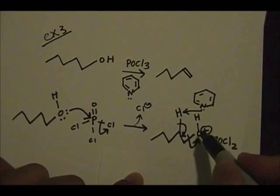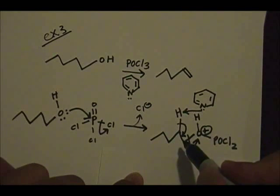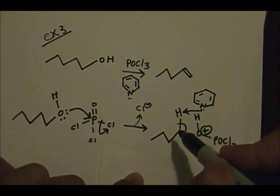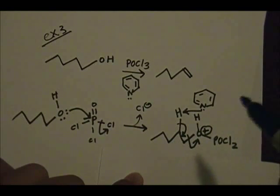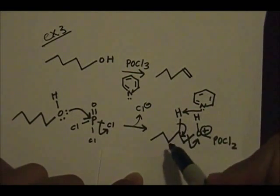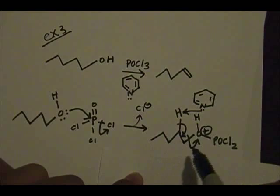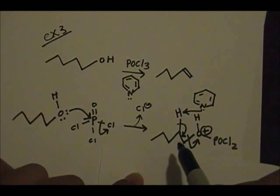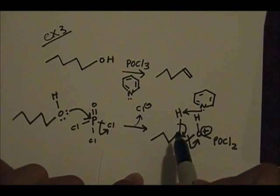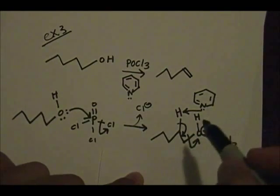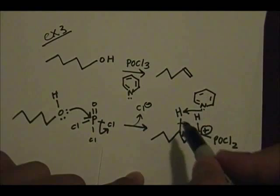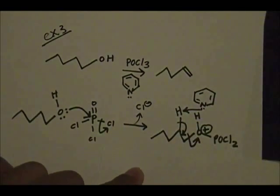This is the carbon that has the leaving group, and the adjacent carbon is the one whose H you choose for the elimination step — not the H on the carbon bearing the leaving group. A lot of people make that mistake. The H is specifically from the adjacent carbon. Pyridine picks up that H, you kick off the leaving group, and you yield your alkene product.